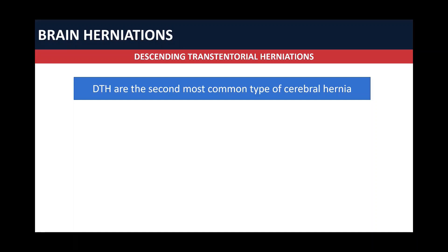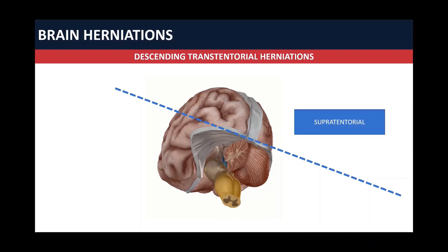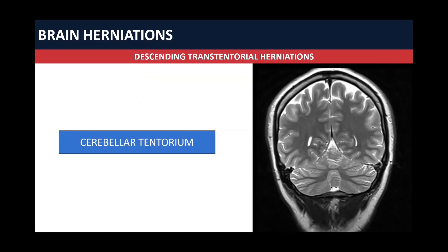DTH are the second most common type of cerebral hernia. To understand the descending trans-tentorial herniations, we have to know what the tentorium is. The cerebellar tentorium is this structure here, attached in the posterior part to the falx cerebri, and has this notch in the anterior part. In this notch we have the brain stem going all the way through this tentorium. All structures above the tentorium are called supratentorial, and structures below are called infratentorial. Now we are going to see these structures on MRI.